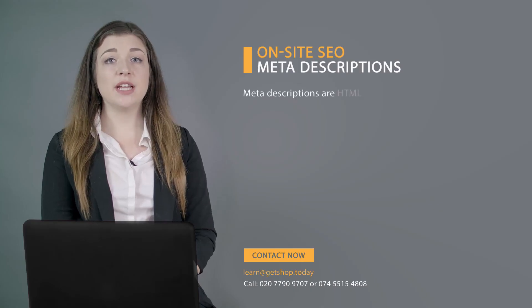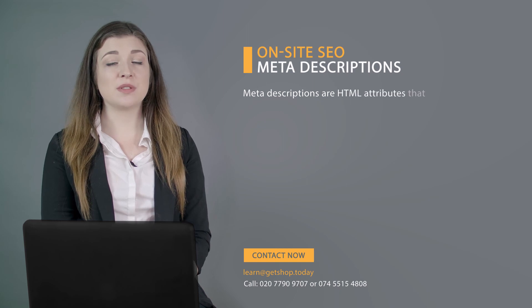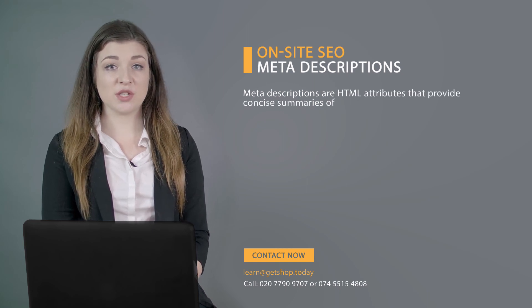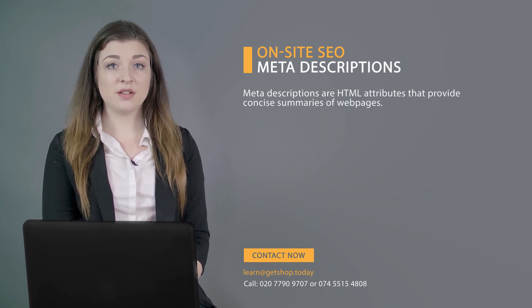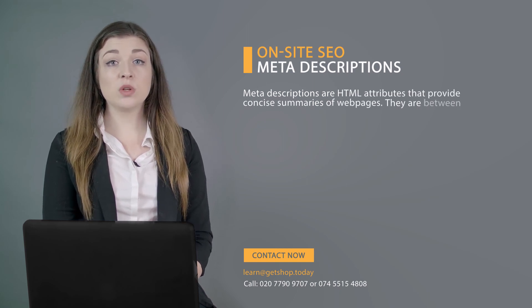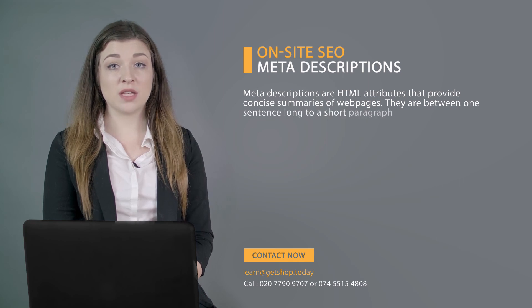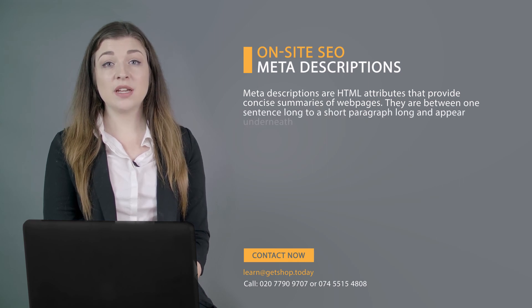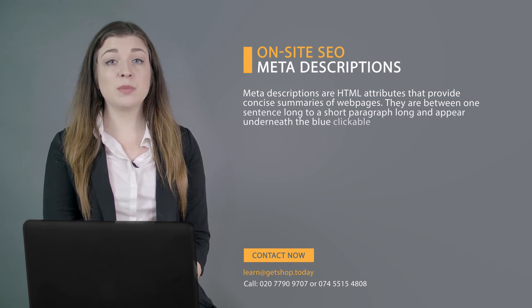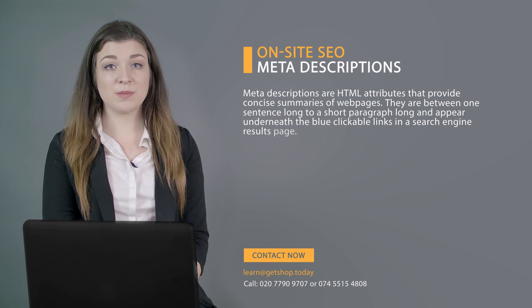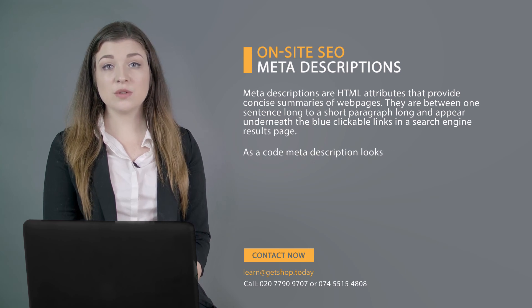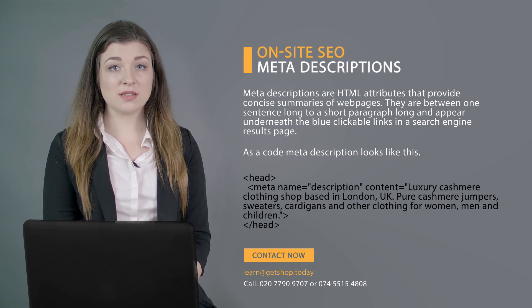Meta descriptions are HTML attributes that provide concise summaries of web pages. They are between one sentence long to a short paragraph length and appear underneath the blue clickable links in a search engine results page. As a code, a meta description looks like this.